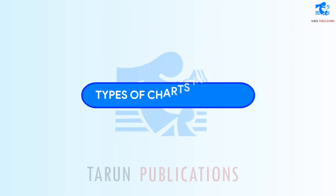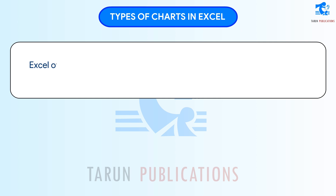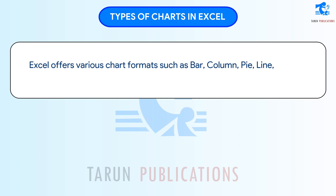Types of Charts in Excel. Excel offers various chart formats such as bar, column, pie, line, area, donut, scatter, surface, and radar.